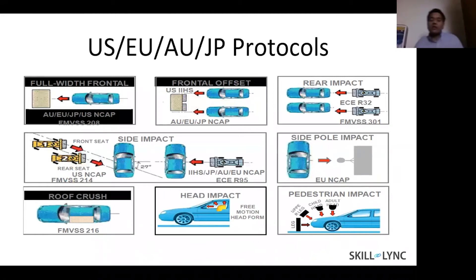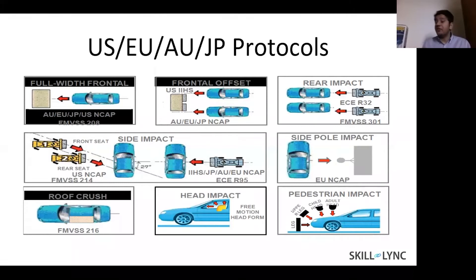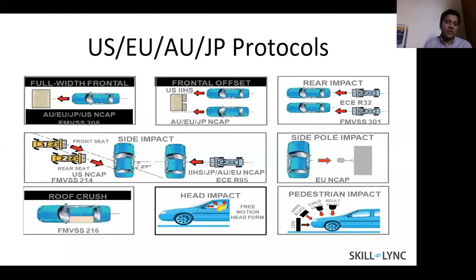The other thing you need to understand is that different countries have different protocols. Depending on geographical conditions, roads are smaller in certain countries, which means the speed limit is different and the size of the car is also different. In addition, the average weight and height of a person differs across countries. There is also a parameter called pedestrian impact — that's what you see in the bottom right image. UPV stands for upper vehicle and UNV stands for under vehicle, but it's easier to understand as underbody and upper body.